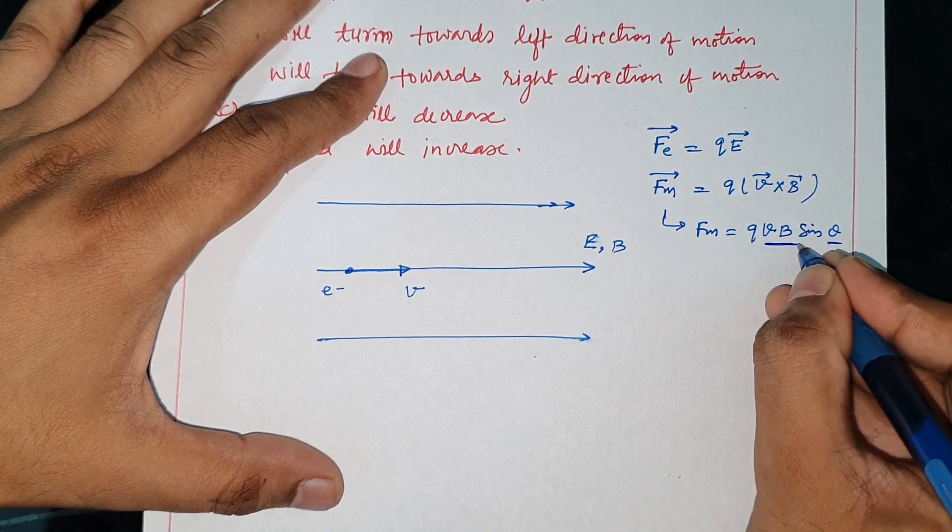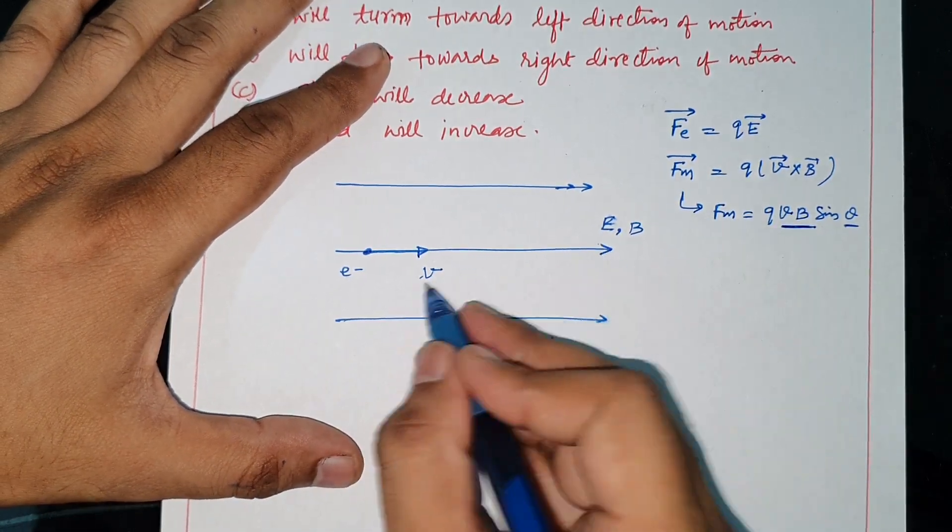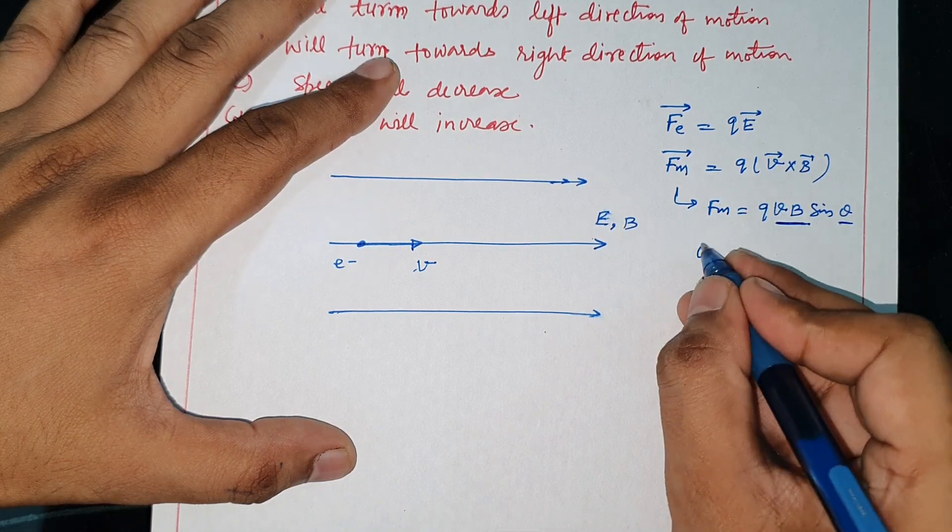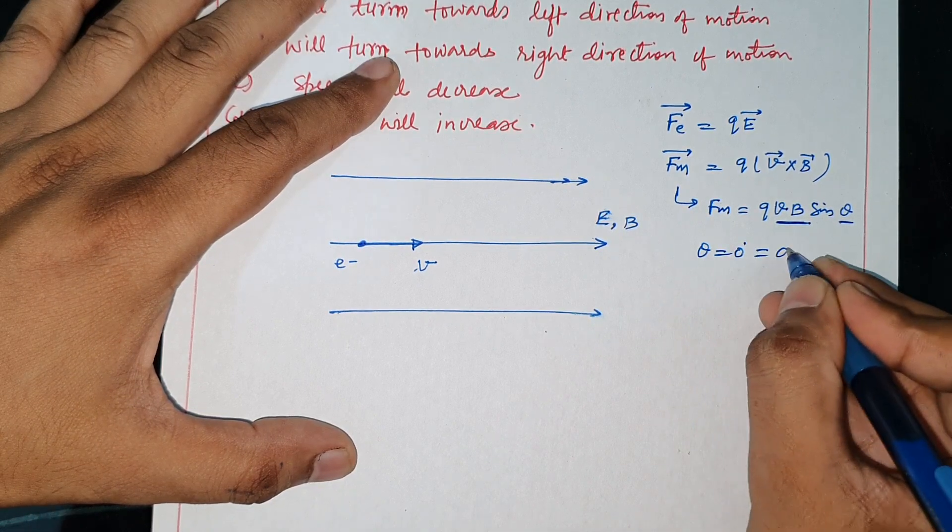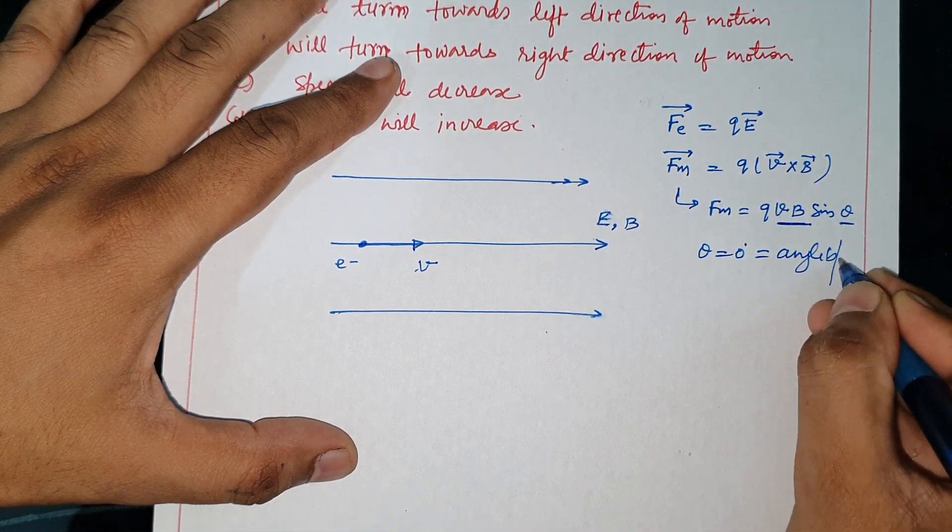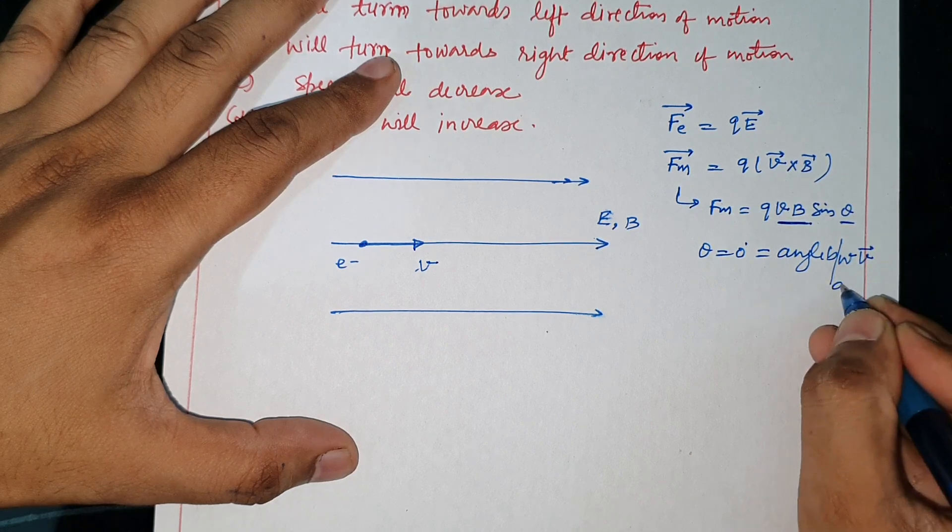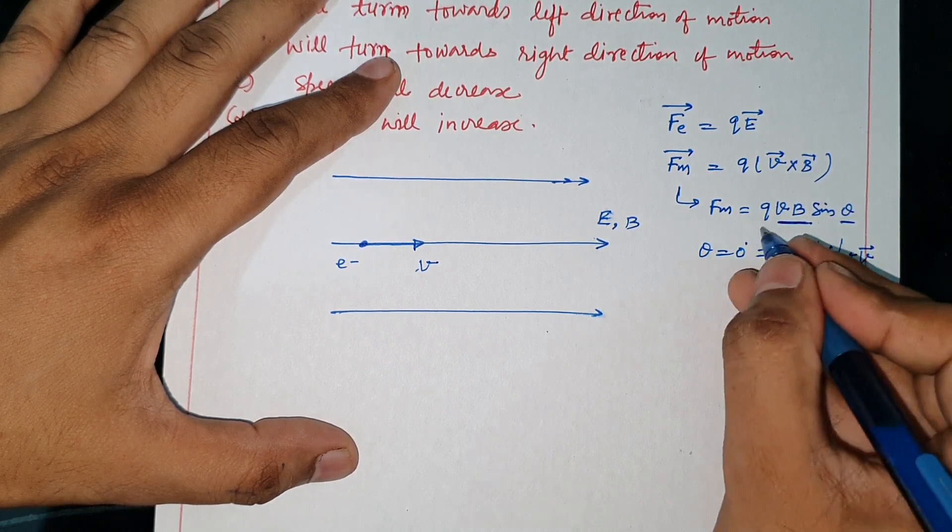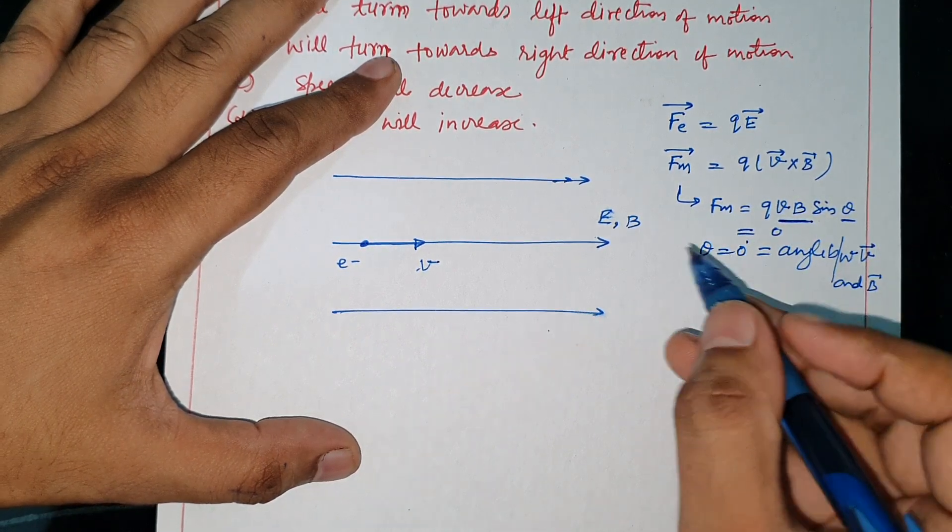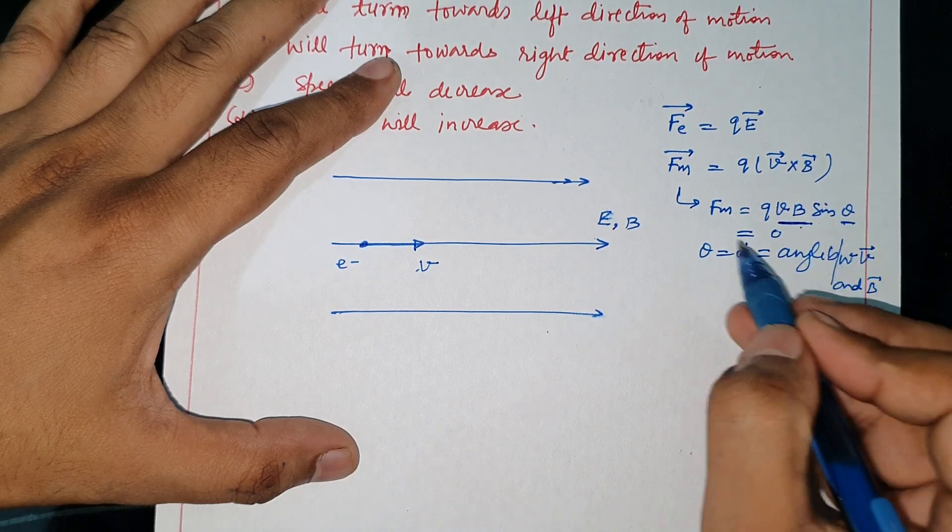Theta is the angle between velocity and magnetic field. So in this diagram, the angle between velocity vector and magnetic field is 0. If theta is 0, sin 0 equals 0, so magnetic force is 0.